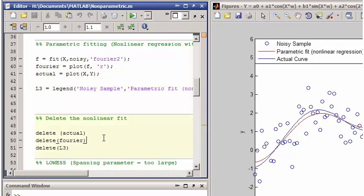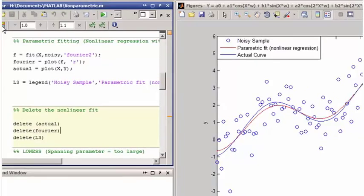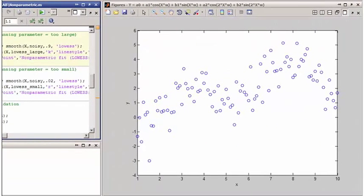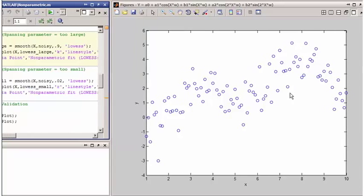Let's assume that you didn't know this data was generated using a Fourier series. The only information that you have available is the set of data points. This is a nonparametric fitting problem. Here, you need to generate a fit without assuming any kind of parametric relationship between the variables.